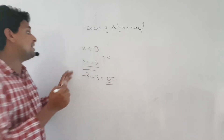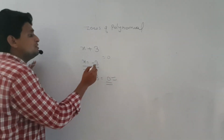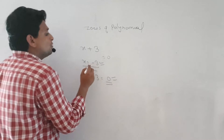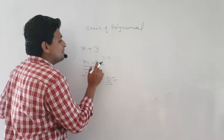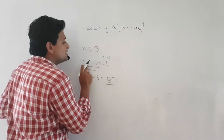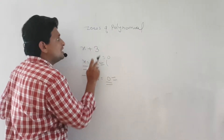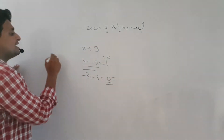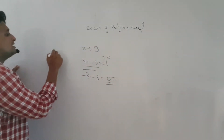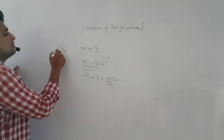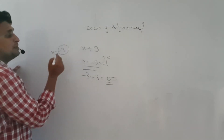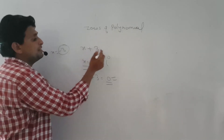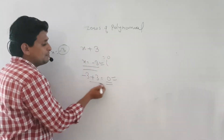If your expression equals minus 3, what will become the zero of polynomial? That means x is equal to minus 3 makes your polynomial zero — that is the solution. When I put minus 3 in it, the expression becomes zero.